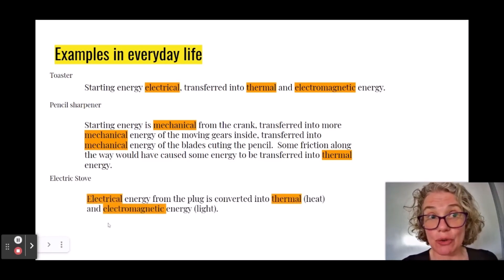An electric stove, again, they're plugged in. So we start with electrical energy, which is going to be converted into thermal energy. That's really the desired form of energy. And it's also going to be changed into electromagnetic energy in the form of light.